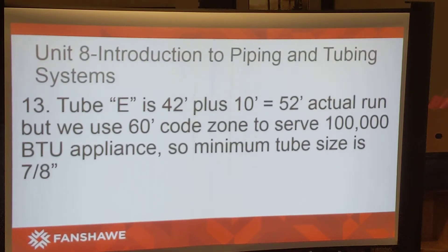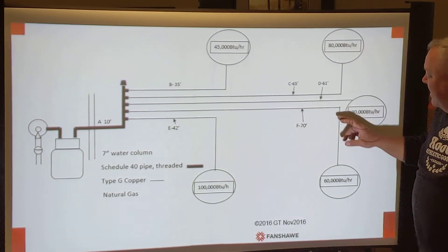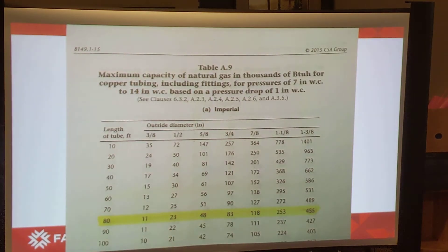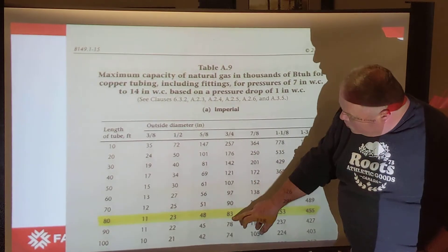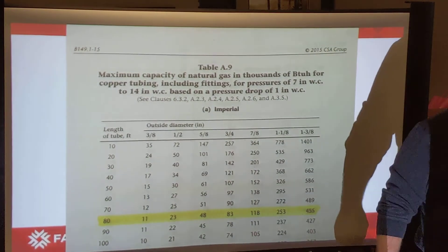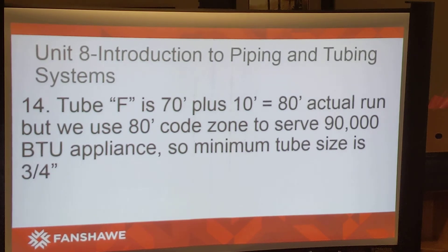Finally, section F is 70 feet with a 60,000 BTU appliance plus the 10 feet, so we go back to the 80-foot code zone looking for 60,000 or higher. Three-quarter inch handles 83,000 BTUs, so the proper tube size for F is three-quarter inch. That completes all the tubing sizing for this manifold system application.